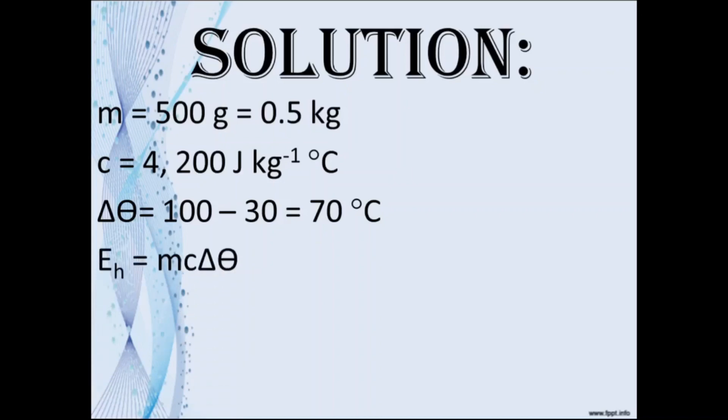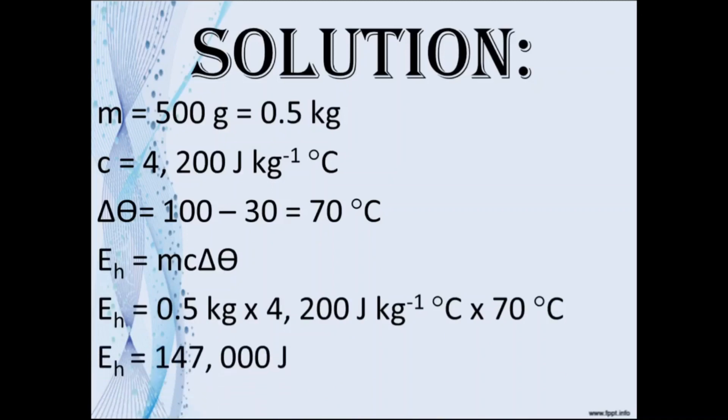So our formula: EH equals mc delta theta. Multiplying 0.5 kilograms times 4200 joules per kilogram Kelvin times 70 degrees Celsius, we get 147,000 joules.